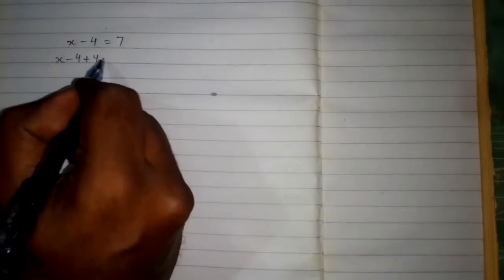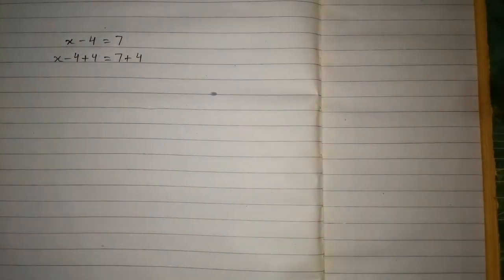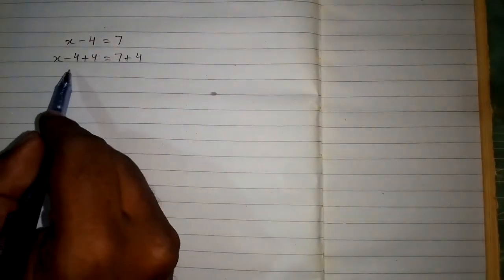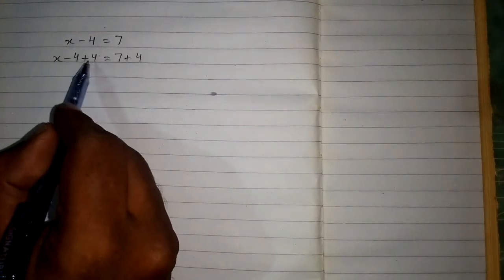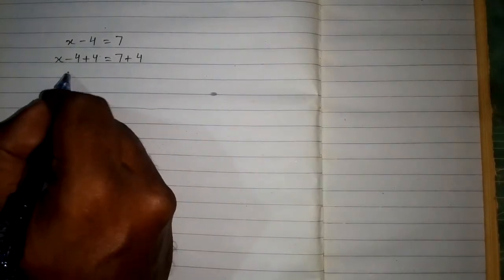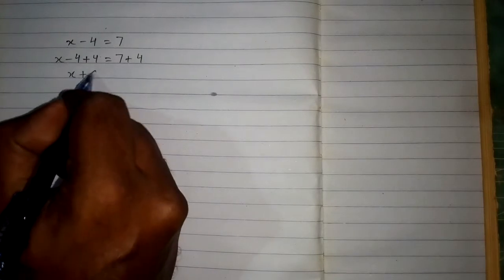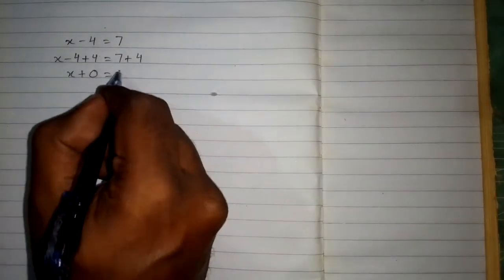In order to find the value of x, we have to remove this minus 4. We can add plus 4 to both sides of the equation. Minus 4 and plus 4 will become 0, so we have x plus 0 equals 7 plus 4, which is 11.